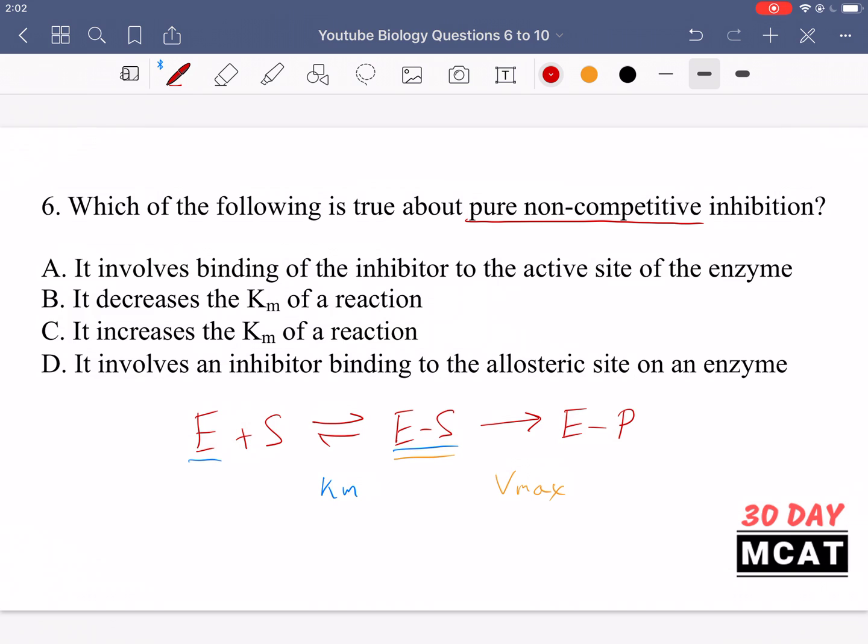The thing is with pure non-competitive inhibition, there is a change in both the E and the ES complex. So both of them are affected to the same degree. And so you should know in pure non-competitive inhibition, we don't get Km either going up or down. But the changes in E and ES are equivalent. Therefore, the overall equilibrium is not affected. And so Km remains the same. It's just Vmax that's affected because we're affecting our ES complex.